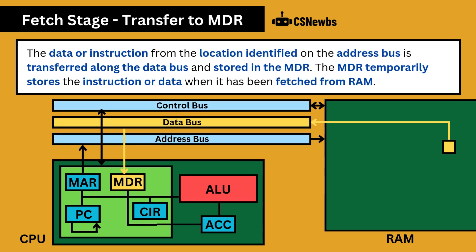The data or instruction from the location identified on the address bus is transferred along the data bus and stored in the memory data register. The MDR temporarily stores the instruction or data when it has been fetched from RAM.